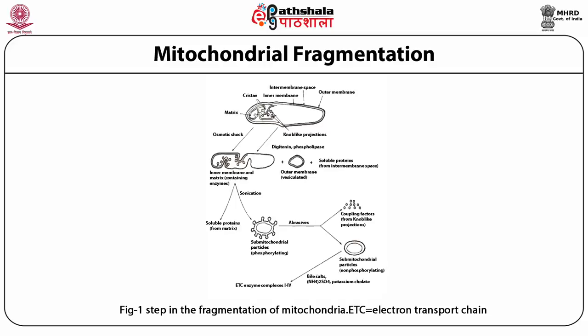This fraction contains the enzymes of the electron transport chain, those of oxidative phosphorylation, and those of the tricarboxylic acid cycle. A soluble fraction containing the enzymes from the intermembrane space is also obtained. The inner membrane fraction is then subjected to mild sonication. The enzymes present in the matrix are released into the medium and the inner membrane forms vesicles. The vesiculated inner membrane can carry out coupled electron transport and oxidative phosphorylation. If the phosphorylating particles are abraded, knob-like projections containing coupling factors are separated from the membrane, which then cannot carry out phosphorylation of ADP to ATP but can still transport electrons through the transport chain.